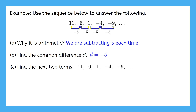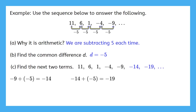Finally, let's find the next two terms. You can either add the value of d or just keep using the pattern you've already found. Pause the video now and find them yourself. You could keep subtracting 5, but let's practice with the common difference by adding negative 5. Negative 9 plus negative 5 is negative 14, and negative 14 plus negative 5 is negative 19.